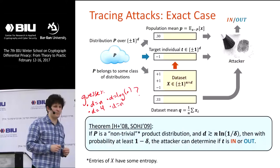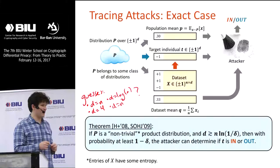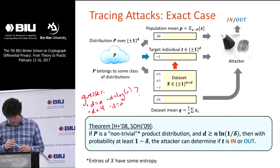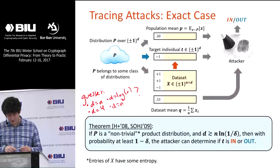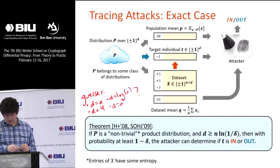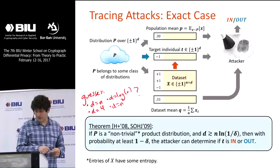The theorem I'm attributing to Homer et al. and a later paper by Sankararaman et al. — which analyzed what happened in the Homer attack when you get exact statistics — is that basically if you give the mean of a dataset with d significantly bigger than n, you will be able to distinguish a random member of the dataset from a random member of the population.